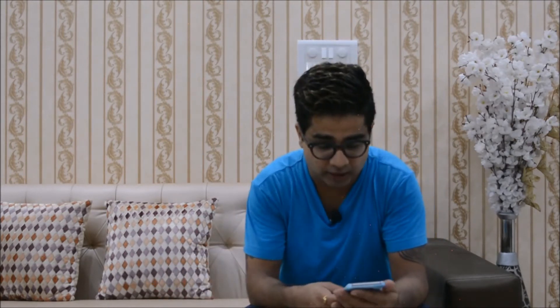The random example we are going to use is the great Indian actress Priyanka Chopra, a worldwide known figure. As you can see on the screen, she is recognized globally by this name. In Step 1, you figure out the vowels in the complete name and write down their corresponding numerical values per the Pythagorean system. For Priyanka, the first name has three vowels with corresponding values of 9, 1, and 1.